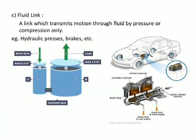A fluid link is one which transmits motion through fluid by pressure and compression only. A link that transmits motion by means of fluid pressure and compression is known as a fluid link. Examples include hydraulic brakes and hydraulic presses.